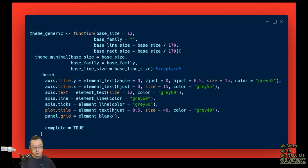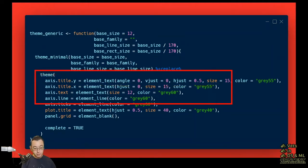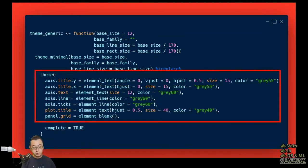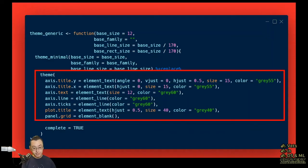And we have our function that follows, and it's going to be based off of the theme minimal. So that's what I chose to start with because it's going to be the closest to what I want the end result to be. We follow that up with our theme arguments, all of the individual pieces that we want to change from theme minimal.